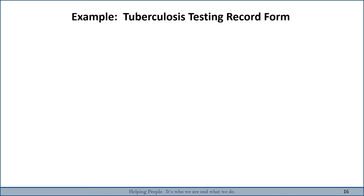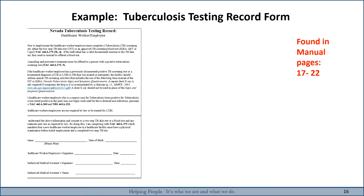The tuberculosis testing record form is shown here. It is difficult to read on screen, but it can be found in the TB manual on pages 17 to 22.